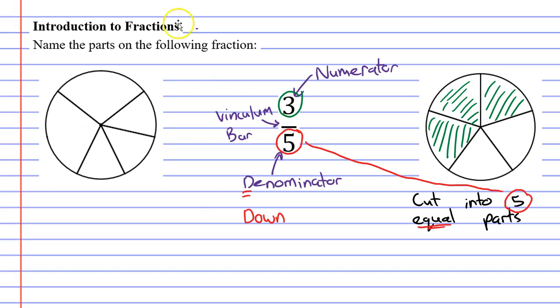If you imagine a piece of pizza, if you were to eat 3 over 5 pieces of pizza, that means that your pizza has been cut into 5 pieces and that you ate 3 of them.